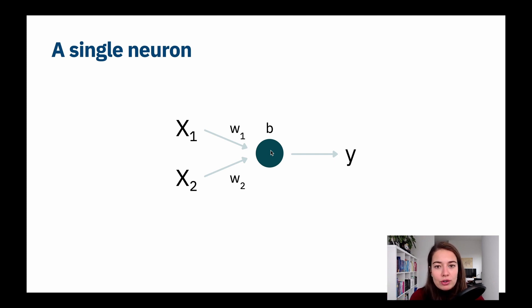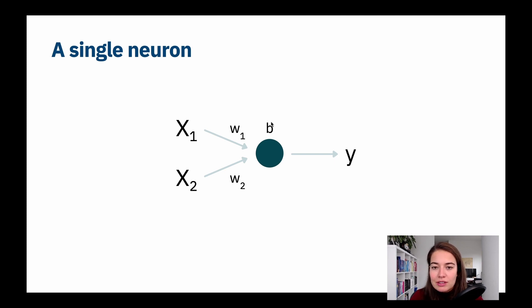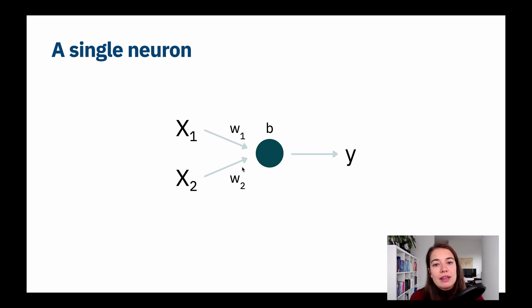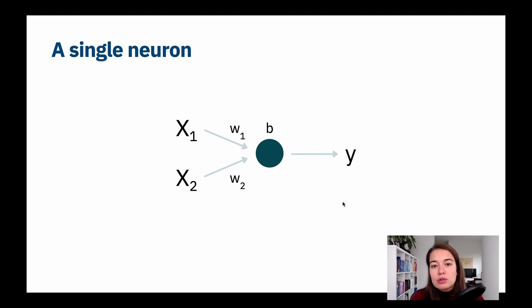While learning something, our network gets initialized with random numbers for these weights. Biases mostly initialize as zero, but for weights specifically we initialize them as random numbers. As the network sees examples, it is learning how to update these weights so that it will output the most correct, or at least the most accurate, thing.